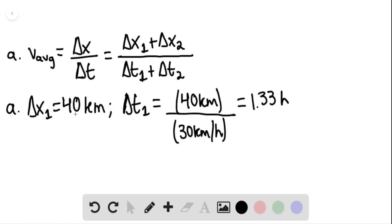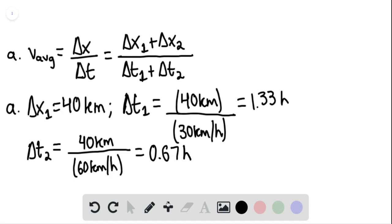And then we have delta t sub 2. This would be equaling to 40 kilometers. However, now we're traveling at 60 kilometers per hour. And so this is giving us 0.67 hours.